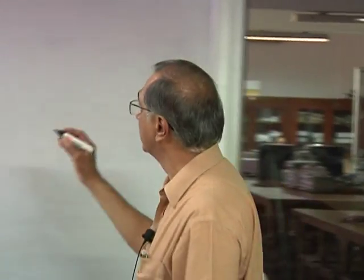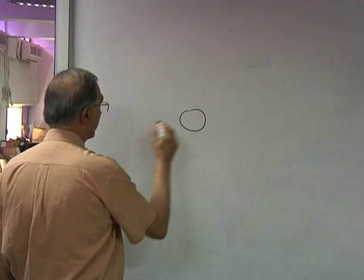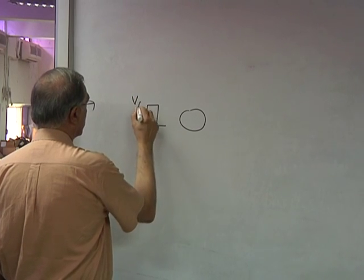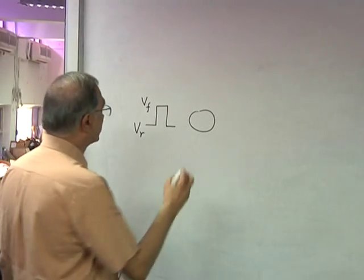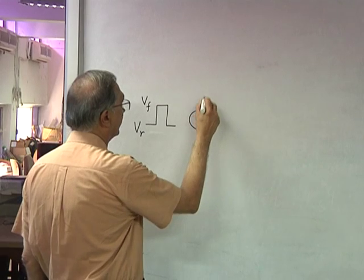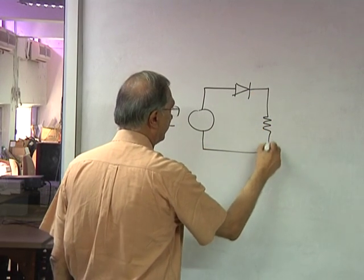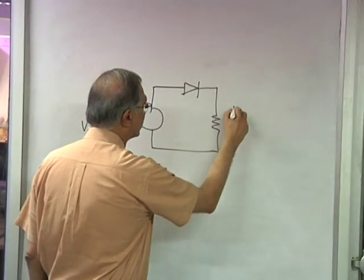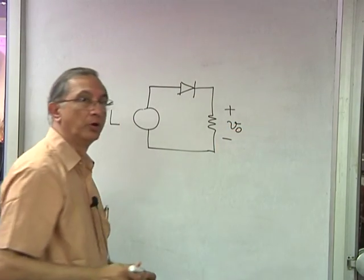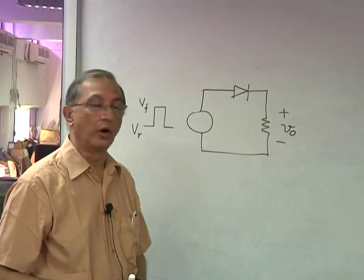The second experiment will be the reverse recovery transient. This is actually a well known experiment for all diodes and what we would do is really look at how a diode when it is forward biased and then switched to reverse bias, how long it takes to turn off. I will draw a very simple circuit: I will apply a square voltage, positive voltage Vf and negative voltage Vr, put it into the diode which is the solar cell, and simply put a resistor and measure the voltage across the resistor as my output voltage. The voltage across the resistor is really proportional to the current flowing through the circuit.